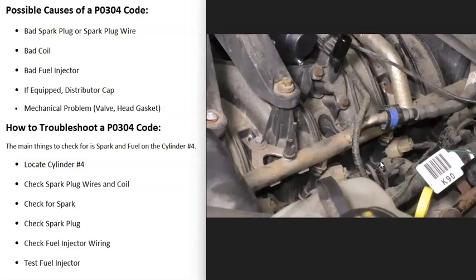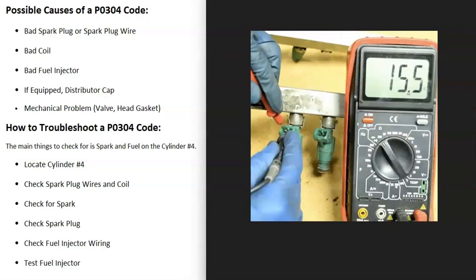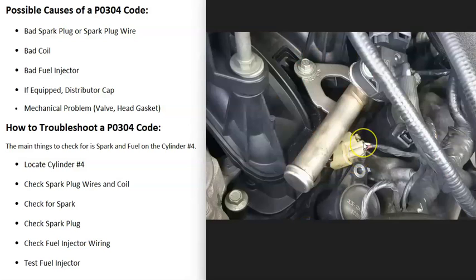If you are getting spark on cylinder number four, the next thing to do is check the fuel injector and its wiring — make sure it's working. Again, there are a few ways to do this: if they're easy to get to, you could swap it with another cylinder and see if the problem follows. You can also test fuel injectors with a multimeter; there are good YouTube videos on how to do that. Also check the wiring going to the fuel injector on cylinder number four, because anything wrong with the wiring — an open circuit, a short, or a bad connection — is going to cause the same symptoms as a bad component.